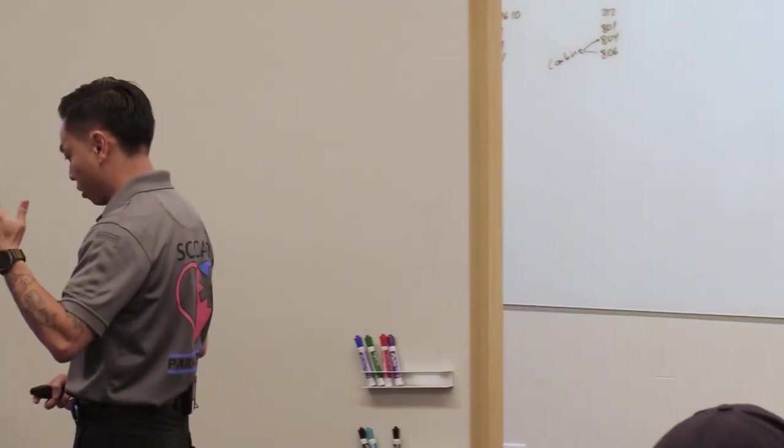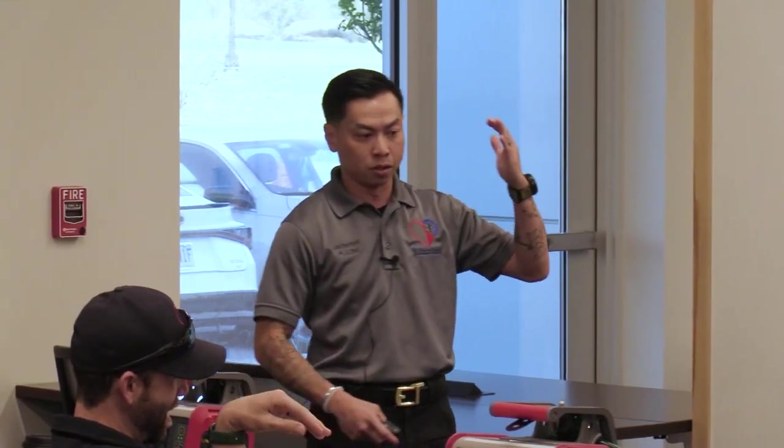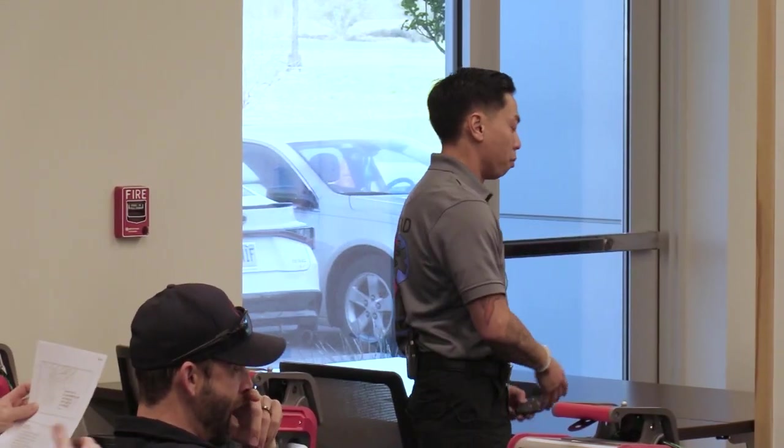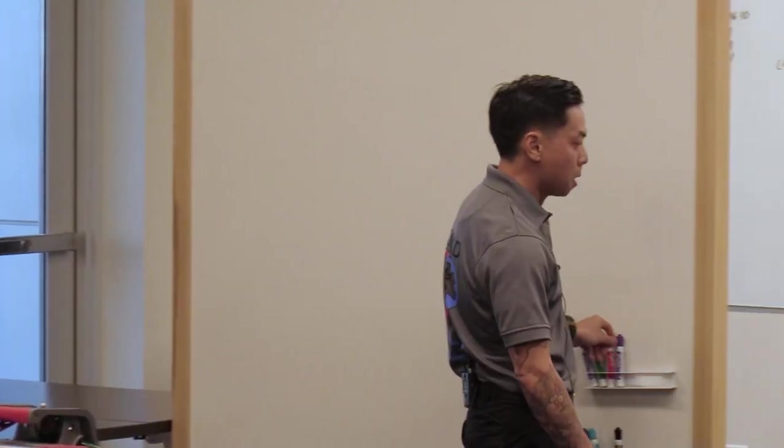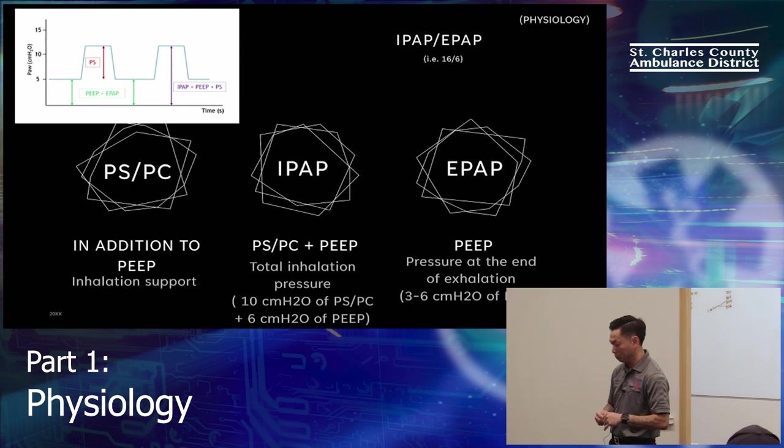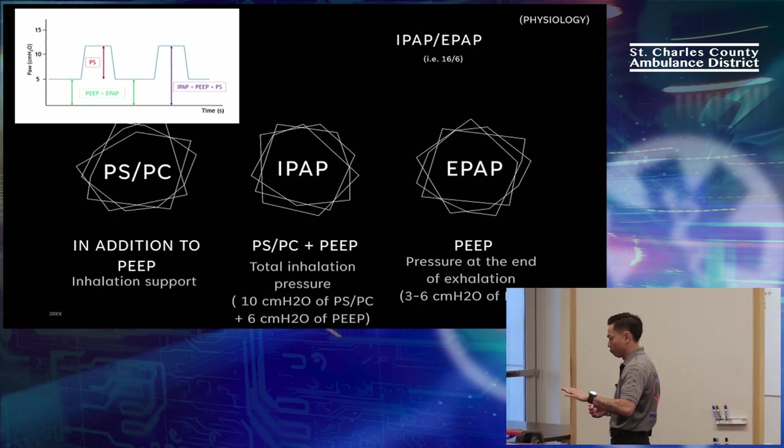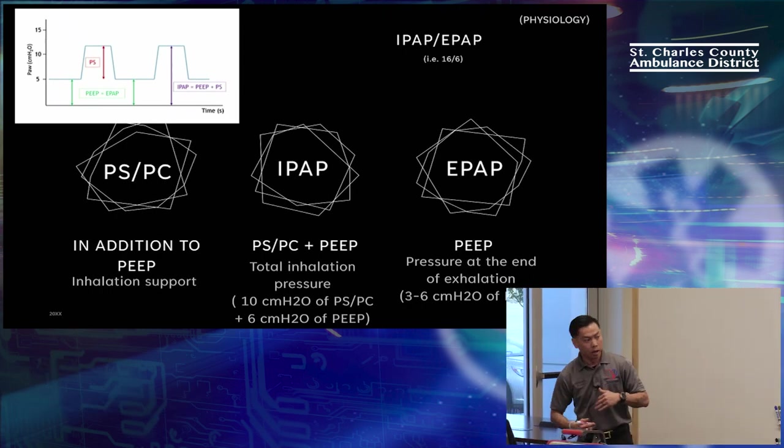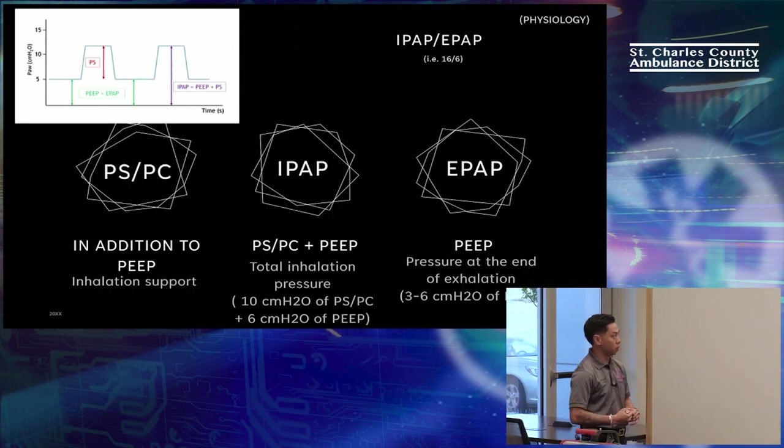The course is split up into three components: physiology, buttonology, and ventilation strategy. Before we even get into the Hamilton, there's a few basic concepts that we have to understand. If we have a strong foundation, as we build on top of it, it's going to be that much easier.